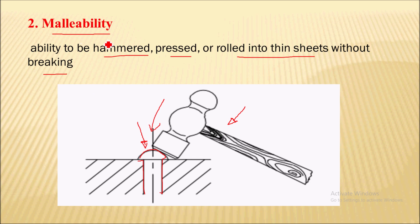A malleable material is said to have good compressive property, meaning they are good in compression. Gold, lead, and tin are examples of malleable materials.